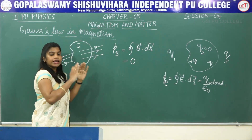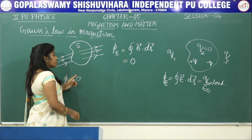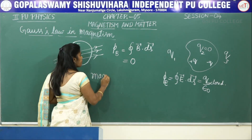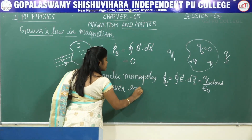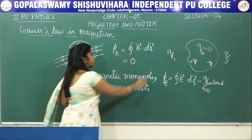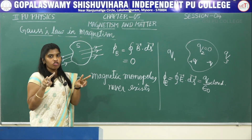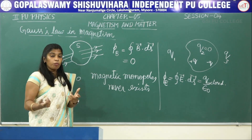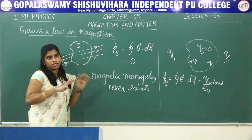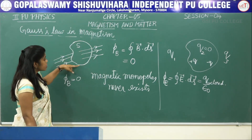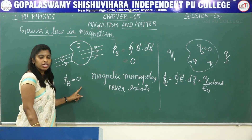Now coming back to magnetism — we have said that the magnetic flux inside this surface is always equal to 0. But in case of electric flux, it becomes 0 only when we place an electric dipole. That means here a magnetic dipole is present. Can I say the magnetic flux is 0 because we have placed a magnetic dipole? Yes — that means this law shows us that the magnetic monopoles never exist.